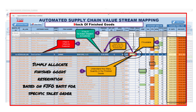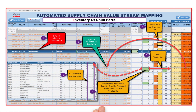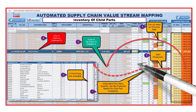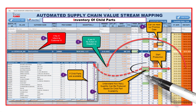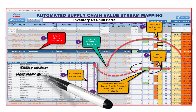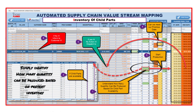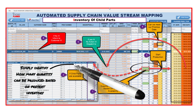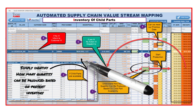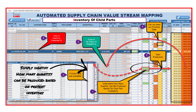Step three: Inventory of child parts. Keeping track of component inventory is made effortless. Our tool helps you maintain just the right amount of child parts to avoid production delays and minimize holding costs.